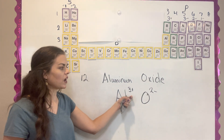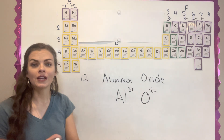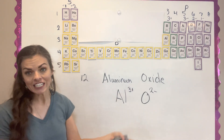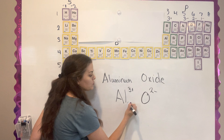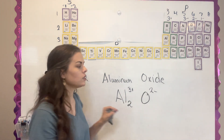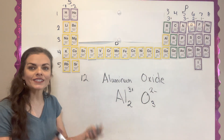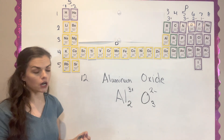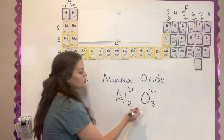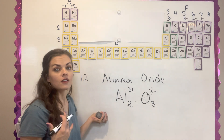If you have one giving three and one taking two, the common factor is six — three times two is six. If you have two aluminums, they're giving away six total electrons. And if you have three oxygens, they're accepting six total electrons — three times two is six. A trick people use is: when you write it, you swap — or crisscross — the charges, and that's how you write the compound formula: Al₂O₃.